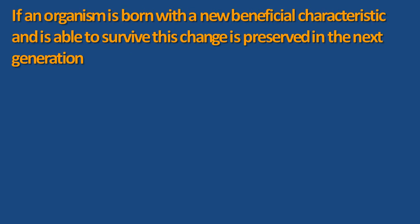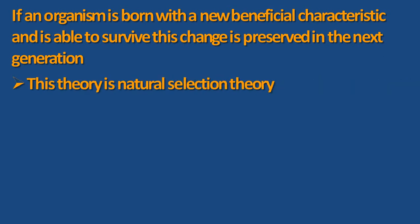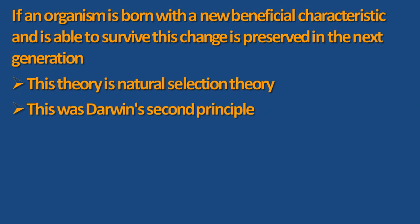The second principle of Darwin's theory states that if an organism is born with a new beneficial characteristic and is able to survive, this change is preserved in the next generation. This theory is also called the natural selection theory, and it is also known as Darwin's second principle.